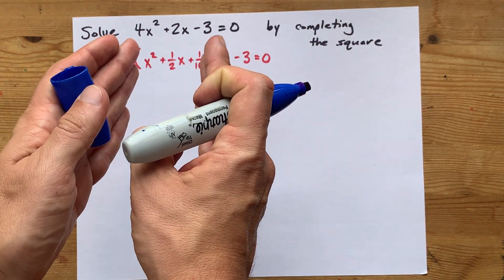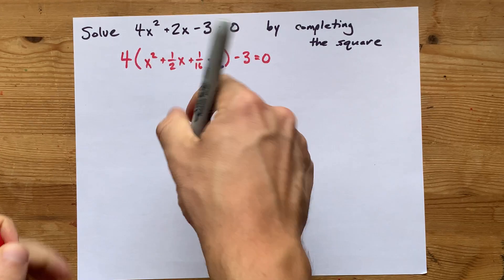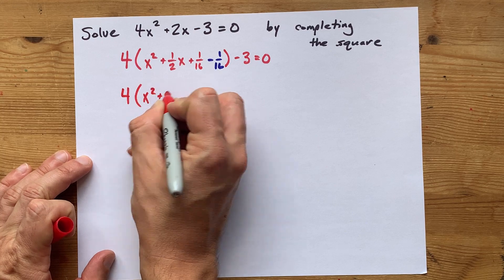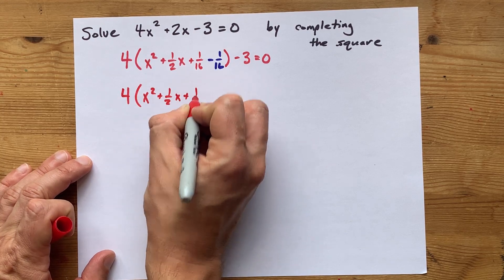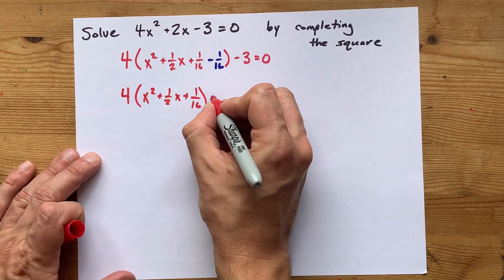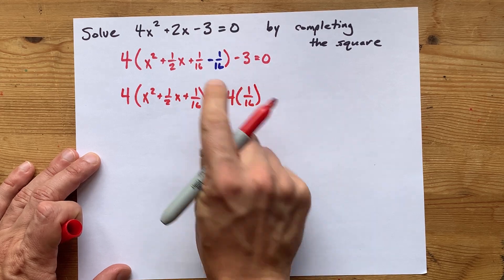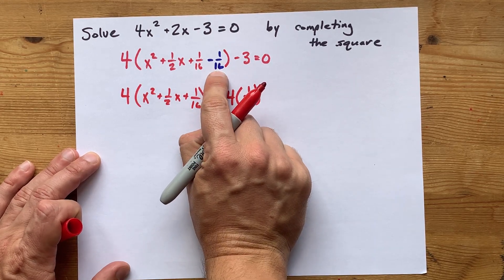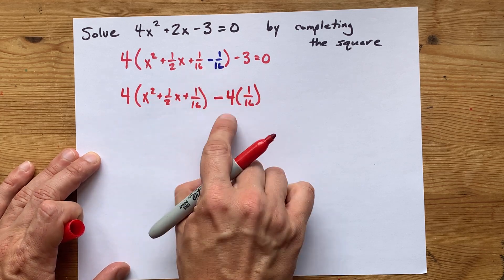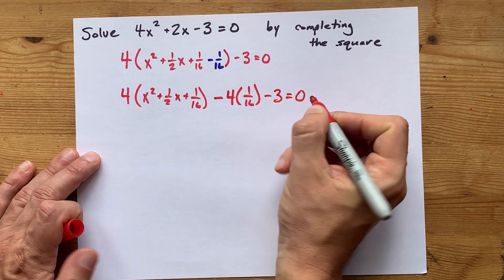Now this section is a perfect square. So, to be clear, I have four times x squared plus a half x plus 1/16th here. And then, in addition, I have another 4, but I'm multiplying that by this negative 1/16th. So this whole chunk gets timesed by 4. That chunk also gets timesed by 4. And I have my minus 3 equals 0.